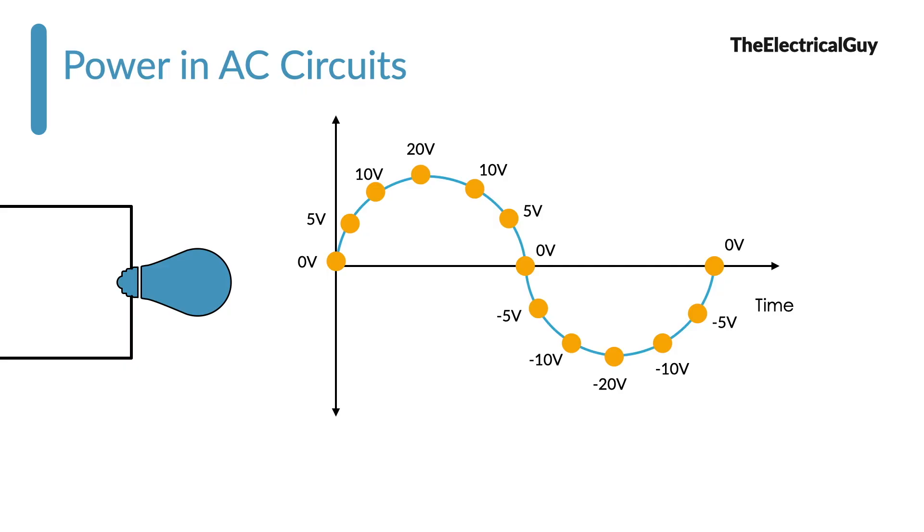Now to calculate the power in this AC circuit, can we consider the peak value of voltage that is either positive 20V or negative 20V or can we consider positive 5V or negative 5V? Well the answer is no. If you consider 20V or 5V or any other value from this waveform, it will lead to wrong calculation. Because the value is only true for some particular time, after that time the value is different. So you can see here 20V is remaining only for highlighted time. After that the value is different.